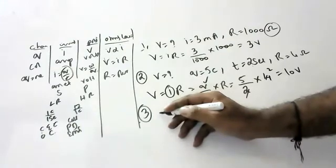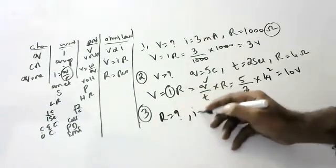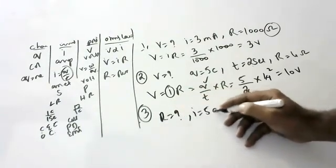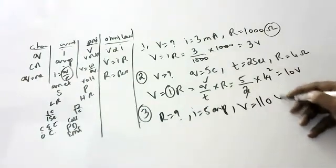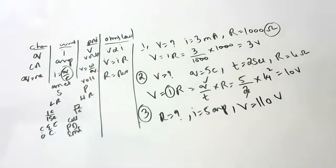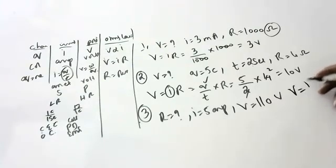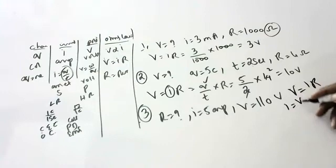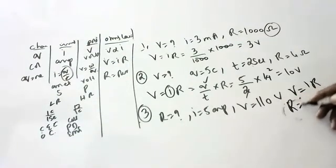Numerical 3: Find the resistance when a current of 5 amperes flows across a potential of 110 volts. Using R = V/I: R = 110/5 = 22 ohms.